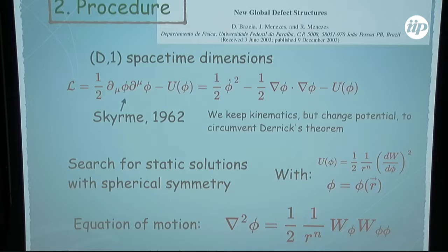This is the kinetic energy density, this is the gradient energy density, and this is the potential. From Derrick's theorem, we can only have topological structure if we are in one spatial dimension, i.e., d=1. What Skyrme did in 1962 was change the kinematics of the solution to find the skyrmion. We are not doing this here — we are going to change the potential by adding an explicit space dependence in the potential.